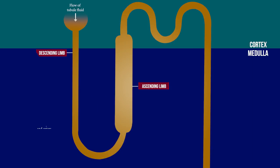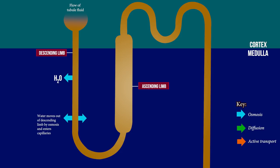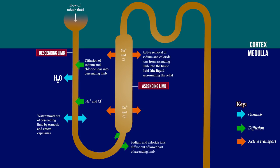On the other hand, the descending limb is highly permeable to water and permeable to most solutes. Its function is to allow substances to diffuse easily through its walls. As the fluid from the tubule flows through the descending limb, it passes through the tissues into which sodium and chloride ions have been pumped. The high concentration of solutes in the medulla makes water leave the descending limb by osmosis, as there is a water potential gradient and water moves down this gradient from inside the descending limb into the tissues outside it. This causes the descending limb to get more concentrated. Some ions do move out of the descending limb but water moves much more rapidly.